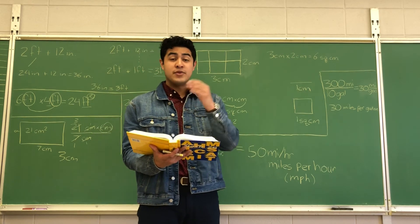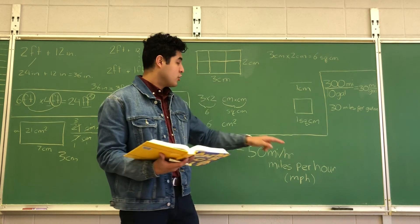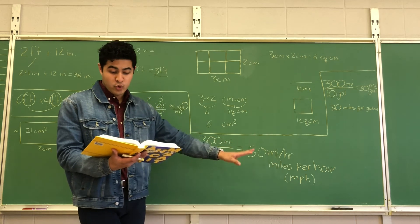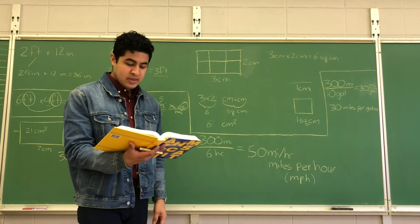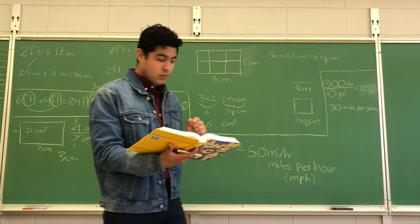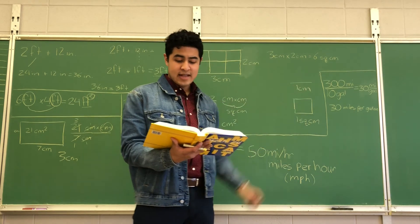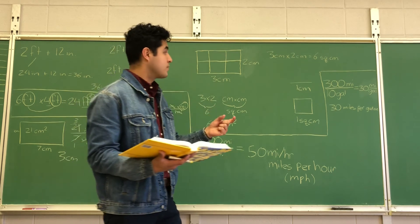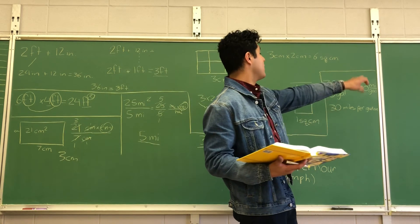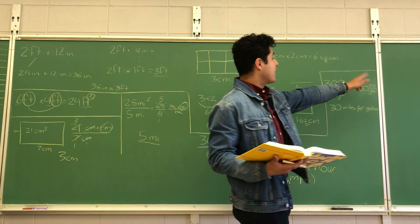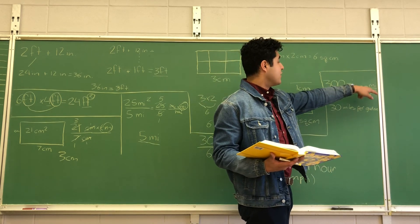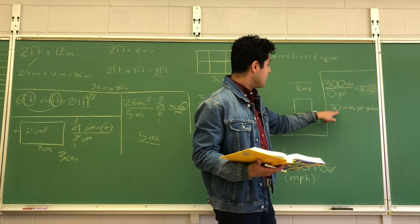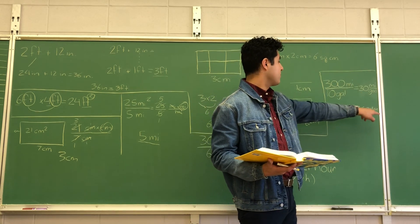When units are not the same and you can't convert them to the same unit, you represent them in division form. Last example: 300 miles divided by 10 gallons. We can divide the numbers — 10 goes into 300 thirty times — but the units don't reduce. So we write it in division form: miles over gallon, meaning 30 miles per gallon.